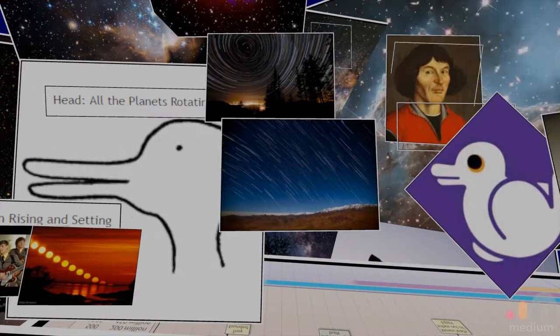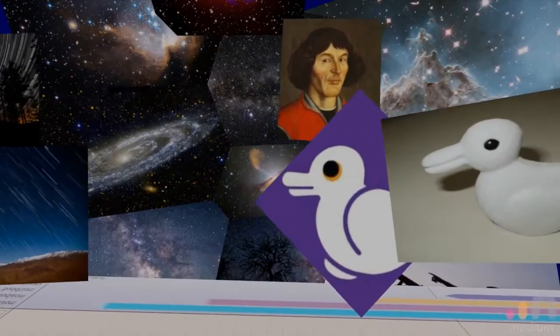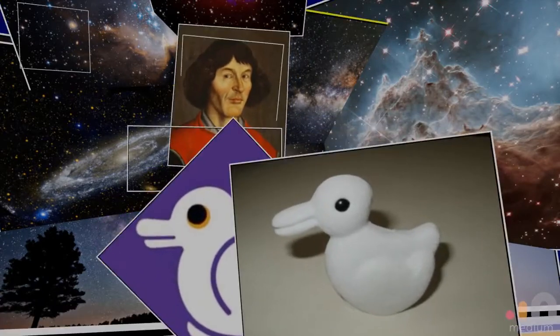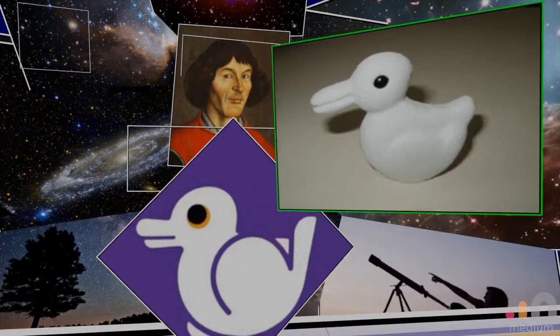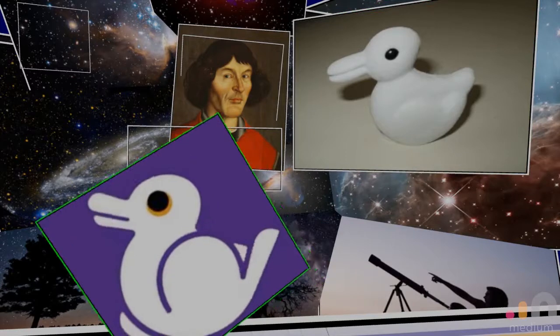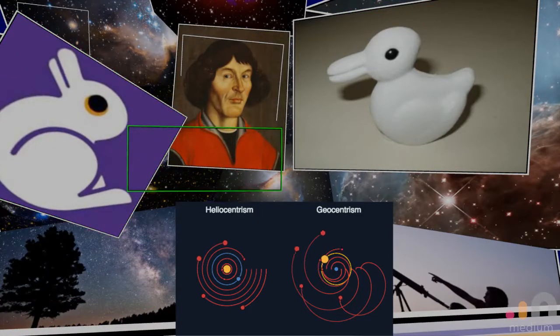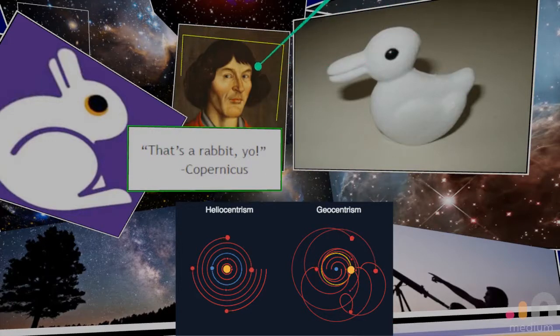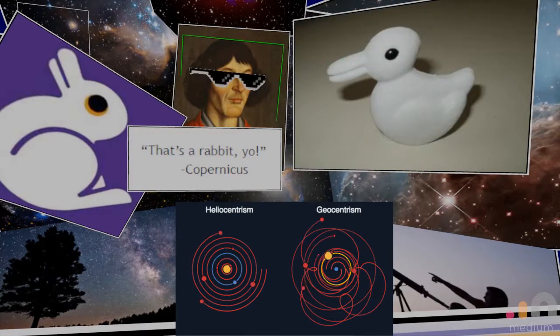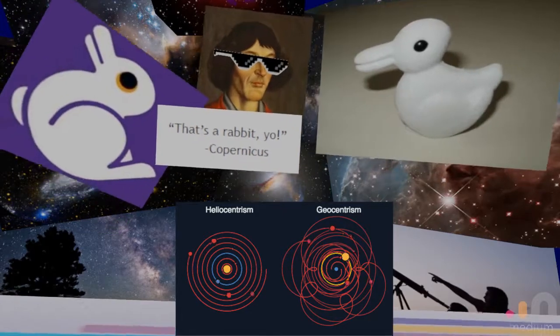Copernicus looks at all the evidence and the data and says, wait a second, that's not a duck, that's a rabbit, guys. Copernicus came up with heliocentrism, meaning, hey, I think the sun might be at the center. If it is, look at how simple this is. In comparison to your geocentrism, look at all this complicated mess versus this.